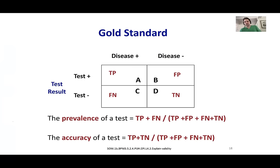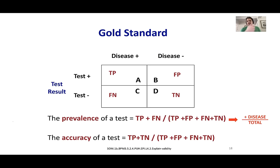Now let's talk about prevalence and accuracy. Prevalence: everyone with the disease over the total amount — how prevalent is the disease in the population. The numerator needs all true positives plus all false negatives, because false negatives do have the disease. So we take true positives plus false negatives over total population. Accuracy: how good is the test? True positives plus true negatives over everybody — what percentage do we get right.